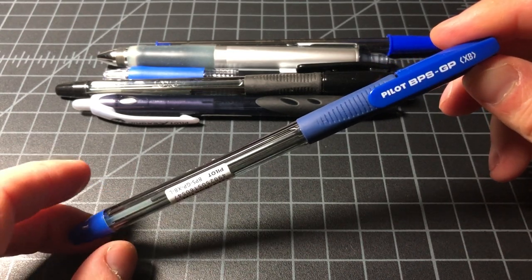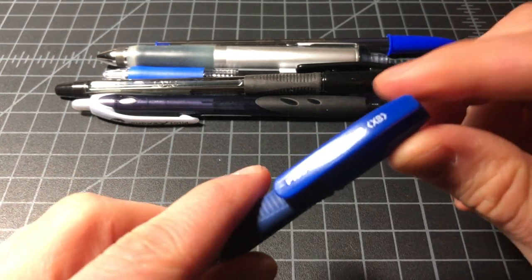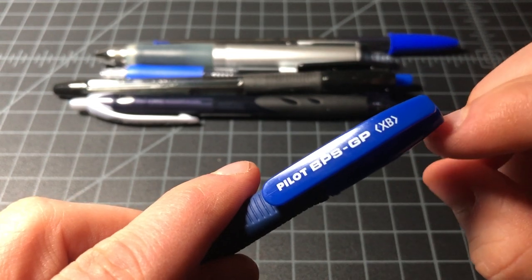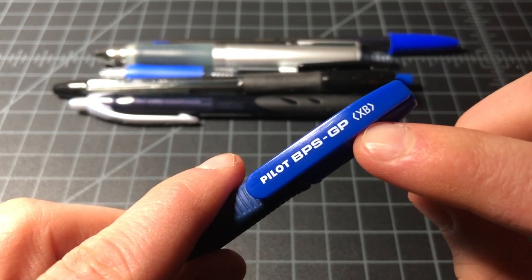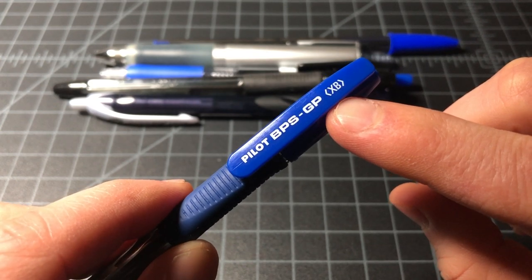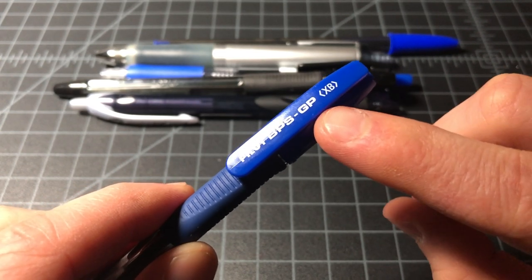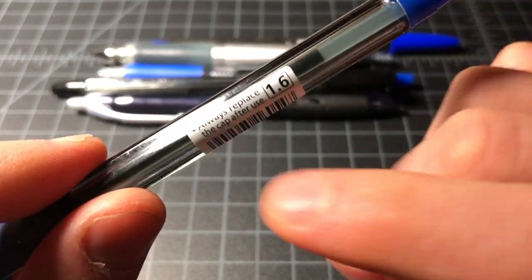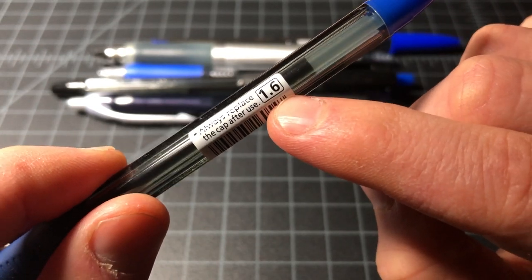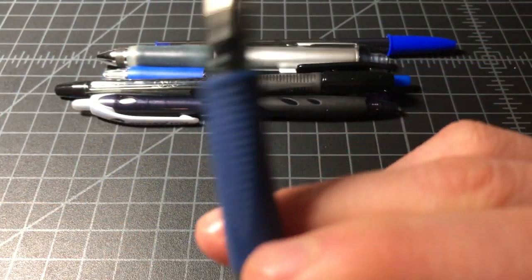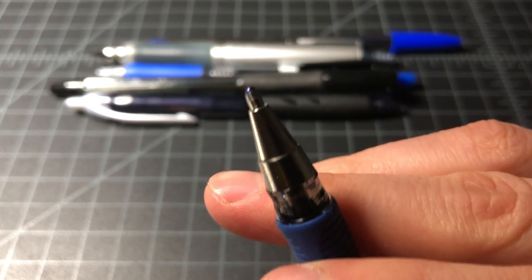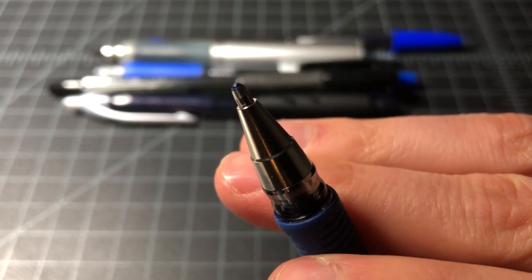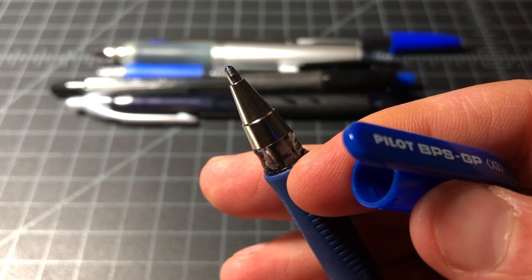Here's one - this is the Pilot BPSGP. It's the XB which is something you see a lot. XB just means extra broad or extra bold. The thing to know is XB doesn't definitively mean 1.6 or 1.4 or 1.2 millimeter, it's just a term the companies use, so you have to actually check. This is a 1.6 millimeter from Pilot and you can see the nice broad ballpoint. You can see the size of that ball there, clearly rather wide.